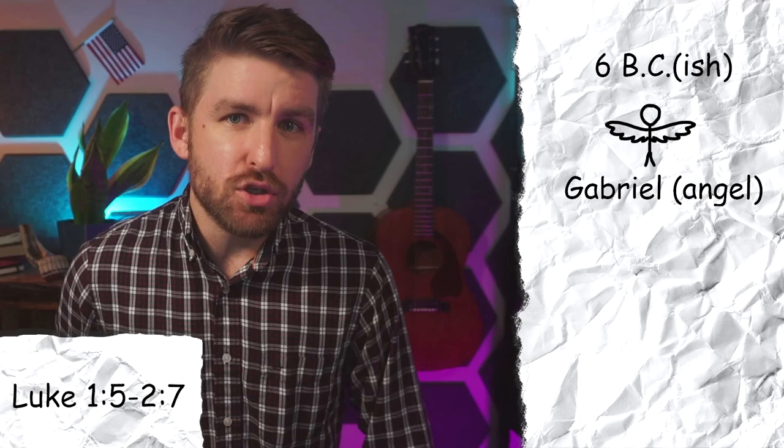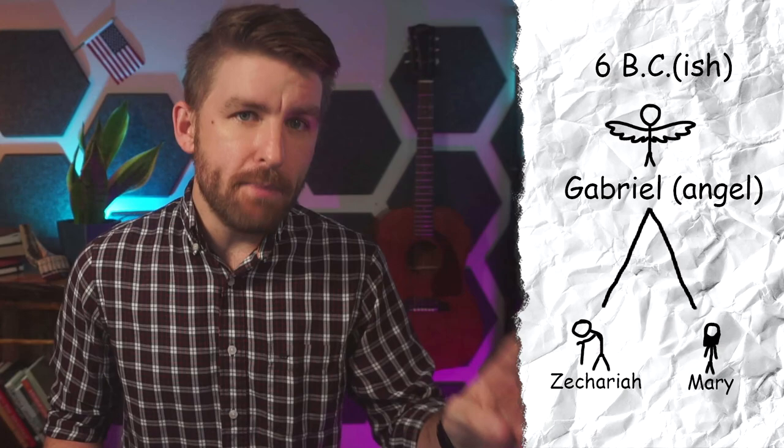Fast forward to somewhere around 6 BC: the angel Gabriel appears to two people — an old man named Zechariah, and a young woman named Mary. They're kin, probably cousins or something. To Zechariah, the angel said he would have a son named John, and to Mary, she would have a son named Jesus. Zechariah's wife Elizabeth, though she was barren and could not have children, miraculously conceived and gave birth to a boy named John.